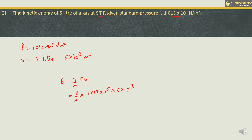Simplifying: (3/2) × 1.013 × 10⁵ × 5 × 10⁻³ = 7.5 × 1.013 × 10² = 7.597 × 10² J. So the kinetic energy is approximately 759.7 joules.